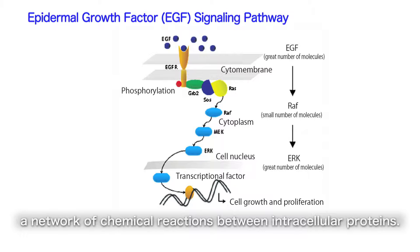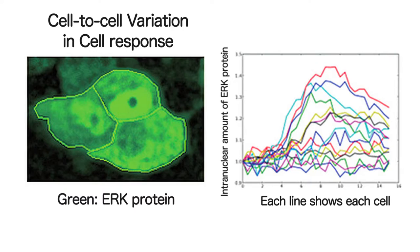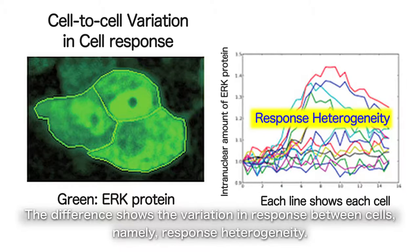In the left picture, the thickness of the color reflects the difference in the amount of proteins. The right figure is its graphical illustration. The difference shows the variation in response between cells — namely, response heterogeneity.